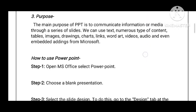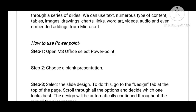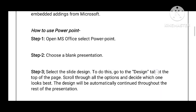So, how to use PowerPoint: Step 1 — open MS Office and select PowerPoint. Step 2 — choose the blank presentation. Step 3 — select the slide show. To do this, go to the Design tab at the top of the page and scroll through all the options and decide which one looks best. The design will be automatically continued throughout the rest of the presentation.